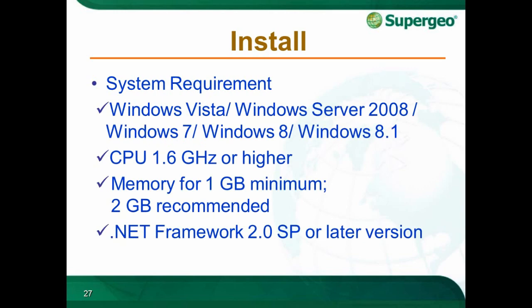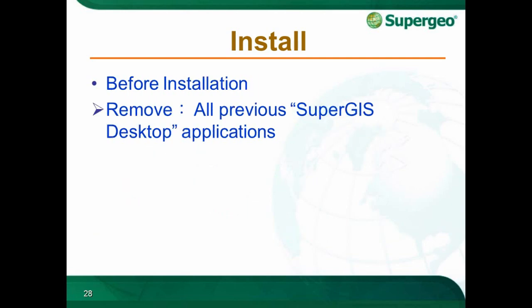The minimum system requirements for SuperGIS Desktop 3 are listed here. It can be installed on various platforms. A minimum of 1GB memory is required, though 2GB or higher is more appropriate. Most importantly, you need .NET Framework 2.0 Service Pack or a later version installed on your machine. If you already have a previous version of SuperGIS Desktop on your machine and want to upgrade, please remove all previous SuperGIS Desktop installations before installing the later version.